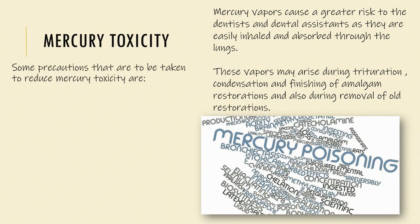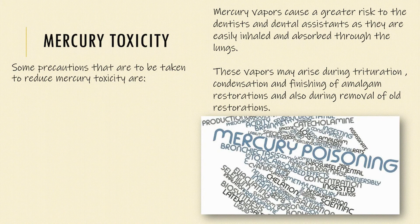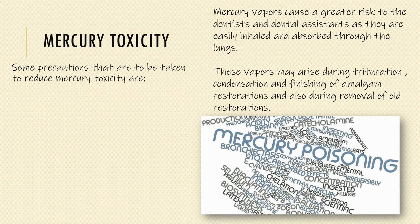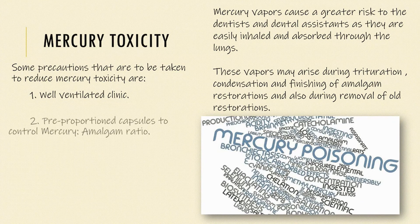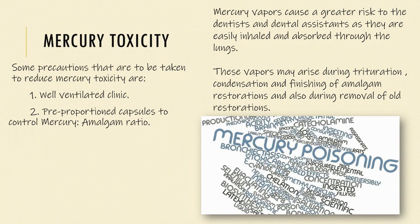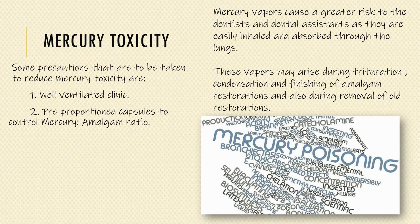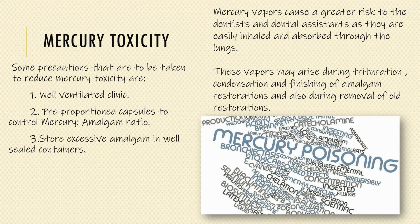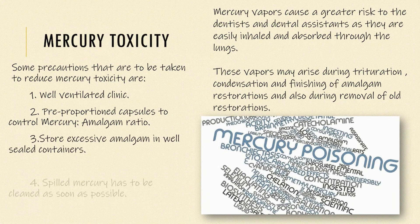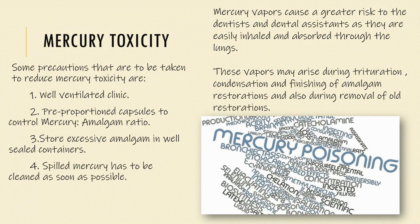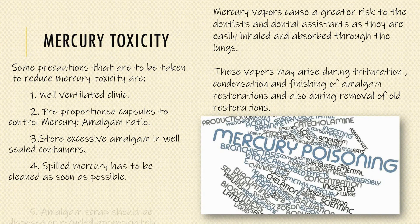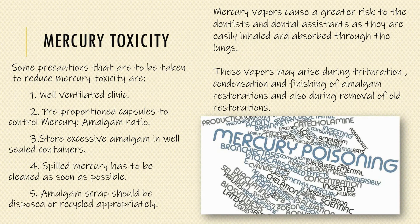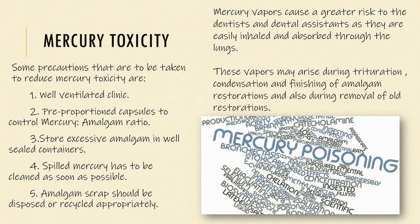Some precautions that are to be taken to reduce mercury toxicity are: well-ventilated clinic, pre-proportioned capsules to control the mercury to amalgam ratio, store excessive amalgam in well-sealed containers, spilt mercury has to be cleaned as soon as possible, and amalgam scrap should be disposed or recycled appropriately.